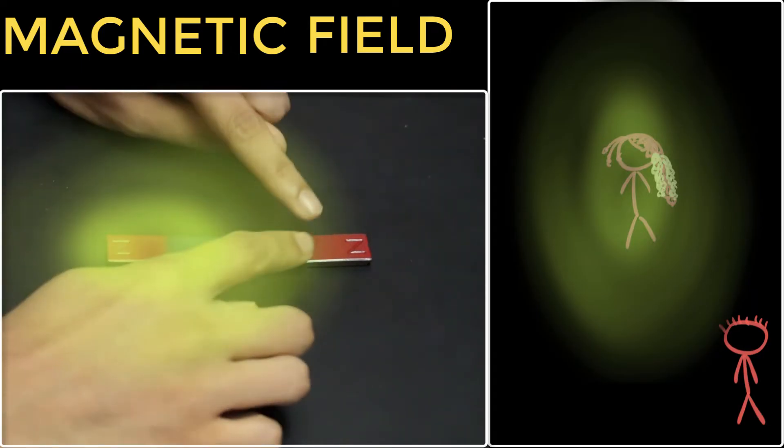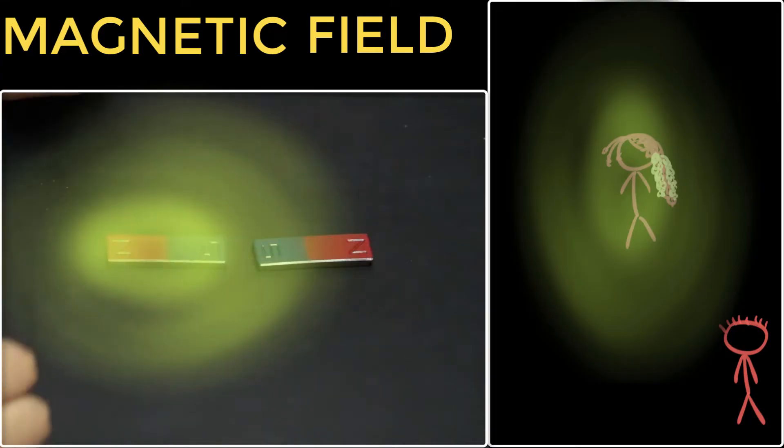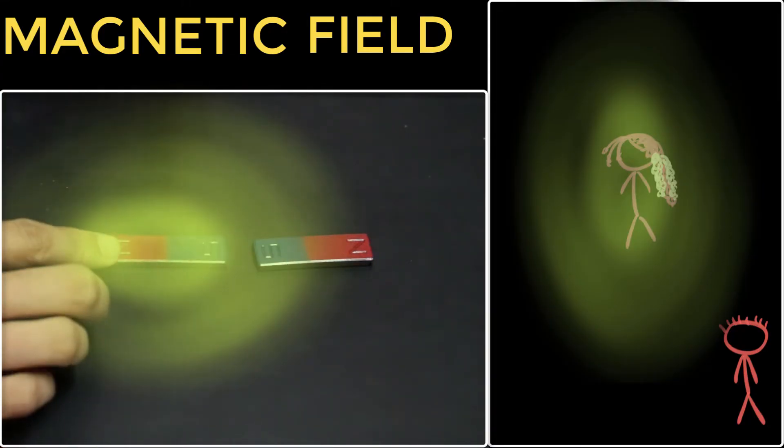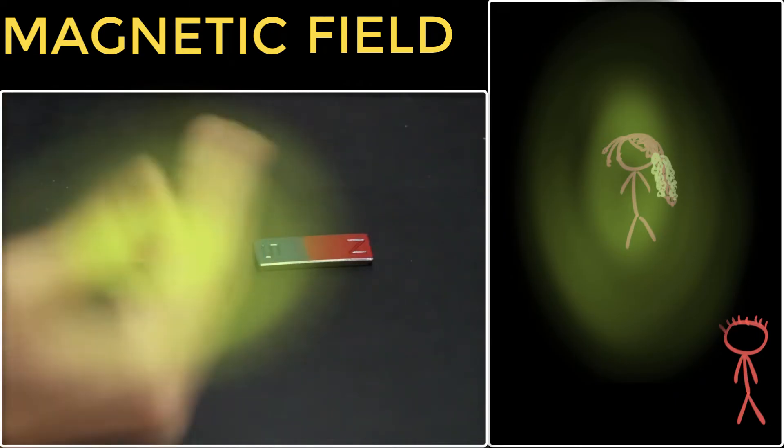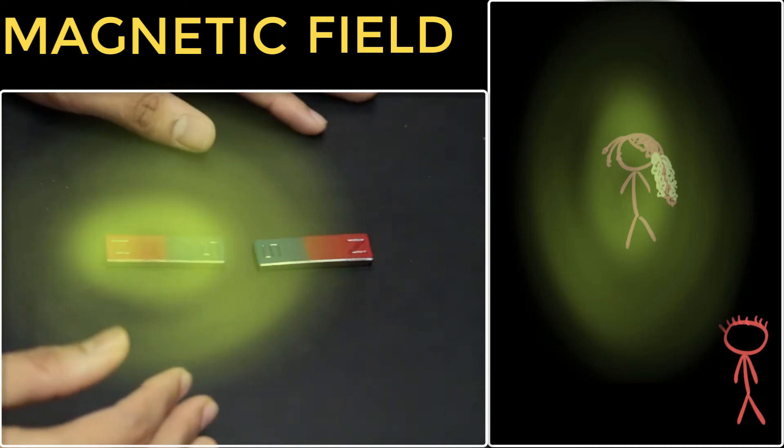And similarly, even this magnet is generating its own magnetic field, which I have not shown over here. And that field is the one that's pushing and pulling on this magnet. So it's the fields that push and pull on other magnets.